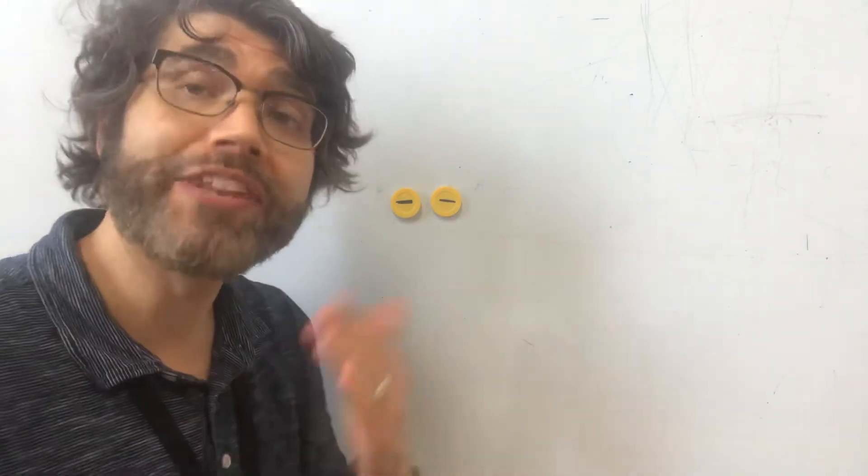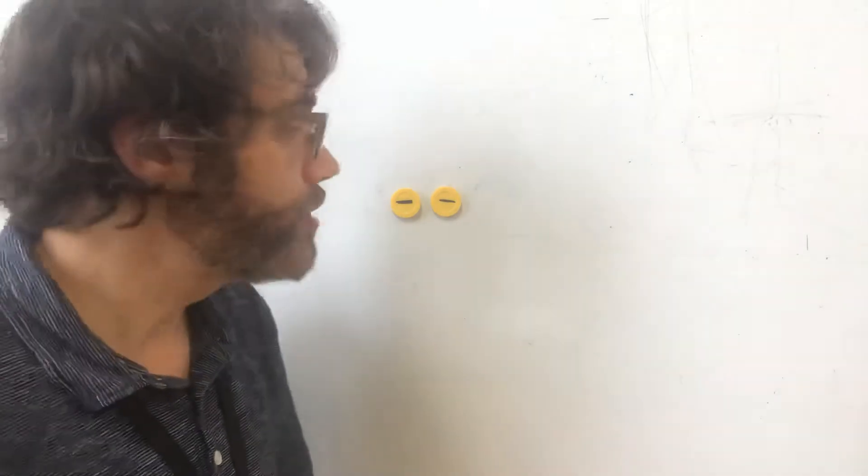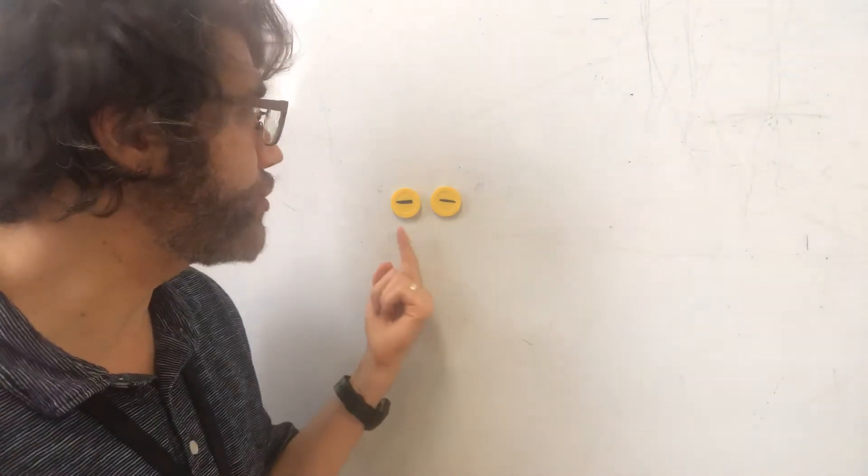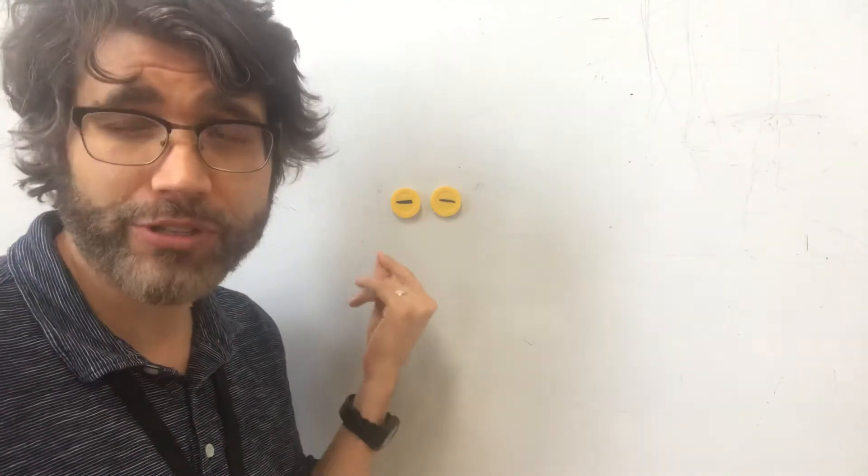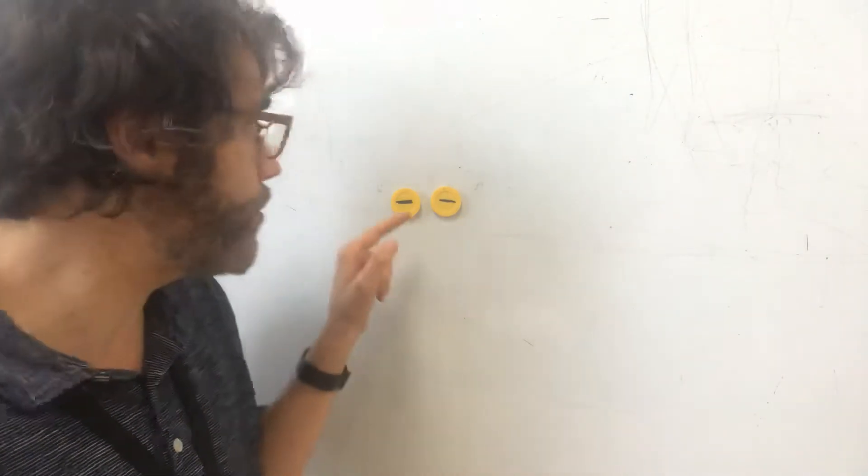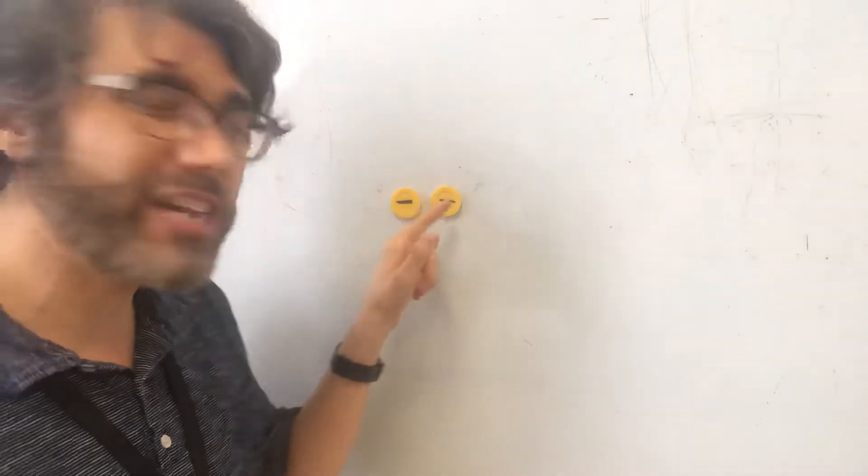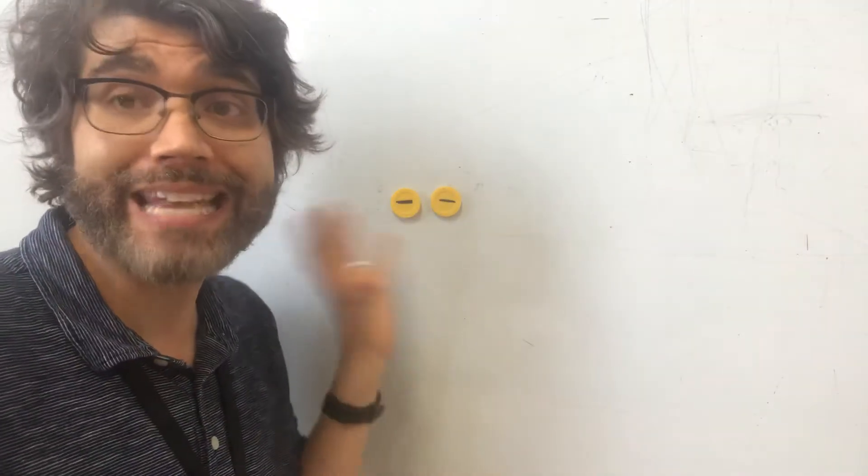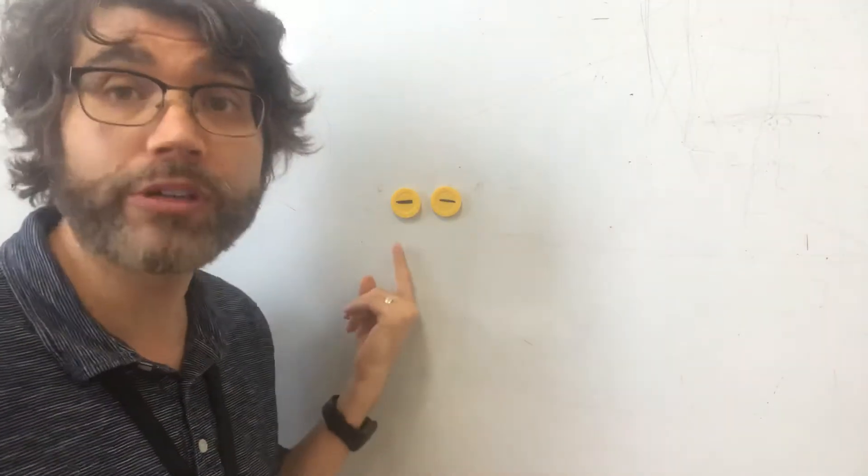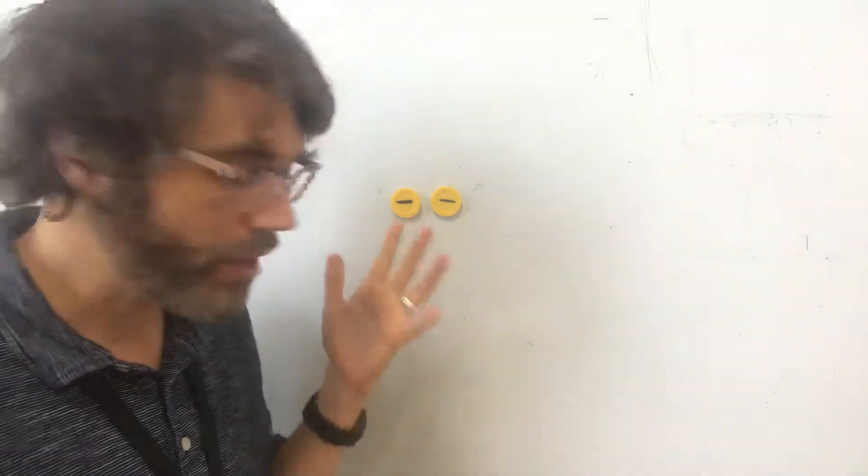Alright, so here we're going to talk about multiplication and division, but with negative numbers, with negative integers in this case. Okay, so let's say that we have $2 of debt. Remember, we're using these poker chips if they're yellow with a little subtraction or a negative sign, it means that it's a negative dollar, it's debt.